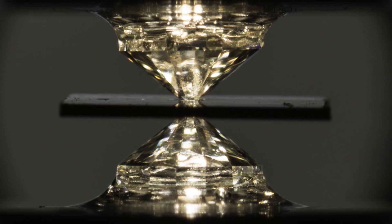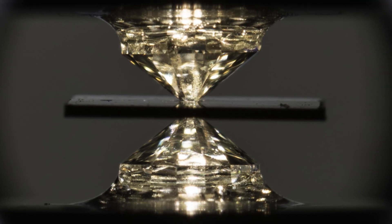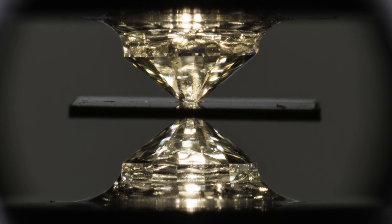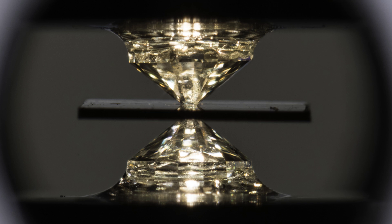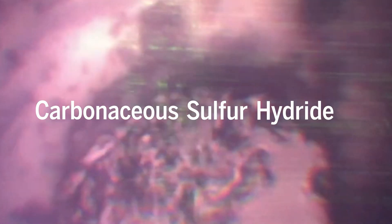The room temperature superconductor was created by crushing carbon, sulfur, and hydrogen between two diamond jaws that eventually exploded. This resulted in a carbonaceous sulfur hydride, one of a class of materials that combine hydrogen with other elements.